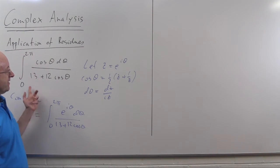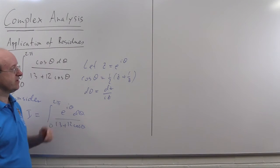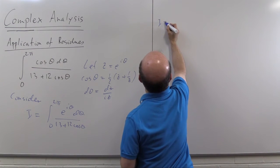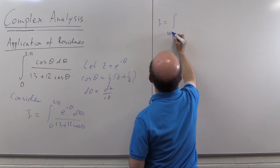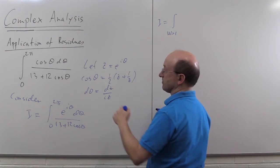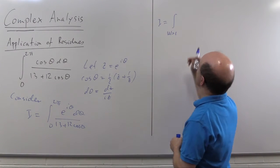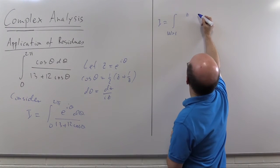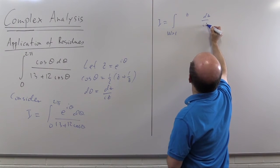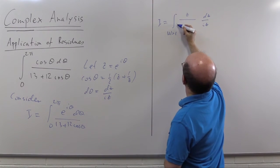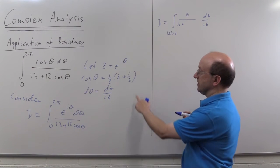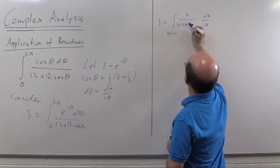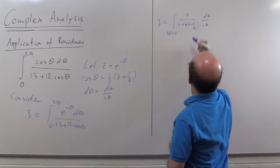So we'd better get on with the calculation and substitute in. I is then the integral around the unit circle, as theta runs from zero to two pi, we'll run around the unit circle. e to the i theta is z, the d theta we'll put at this side, d z over i z, 13 plus, well 12 cos theta multiplied this expression here by 12, and we're going to get 6 z plus 1 upon z.